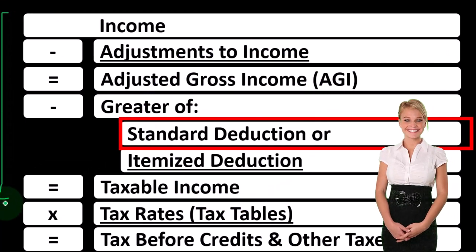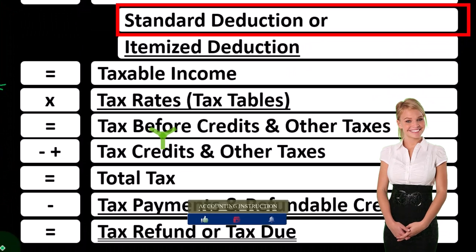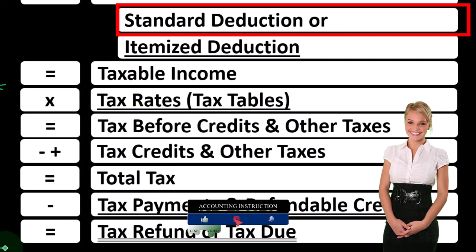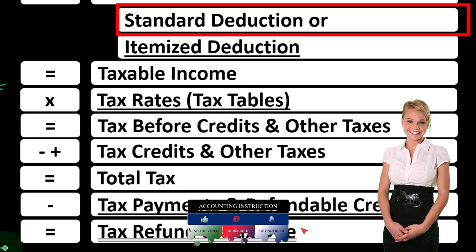The second half of the income tax equation will be calculating the income tax, applying any other taxes like self-employment tax, for example.